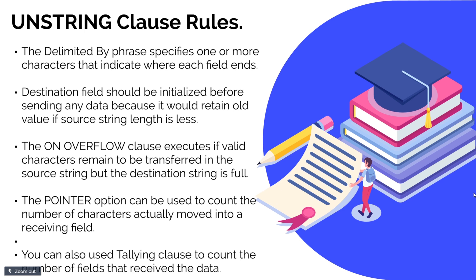There are five important unstring rules. First, in the DELIMITED BY phrase you can use any special character — it can be a space, a hyphen, or any character based on which you want to split the string. Second, you should always initialize the destination fields. Third, the ON OVERFLOW clause will only execute if there is a valid character in the source field to transfer but the destination is already full. Fourth, you can use a POINTER option to count the number of characters received. Fifth, you can use the TALLY option to see the number of fields that have received a value.